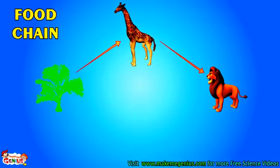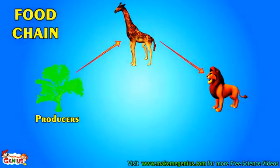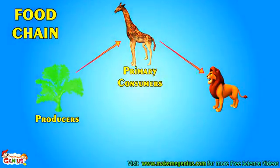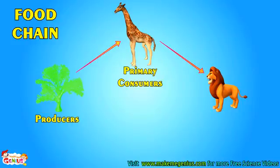In a food chain, plants are known as producers as they produce food. The species who eat plants are called primary consumers. And the species who eat species dependent on plants are called secondary consumers.